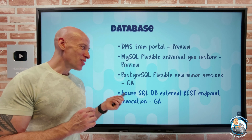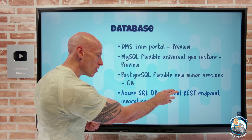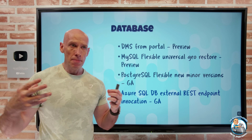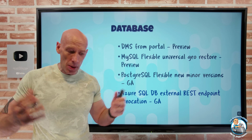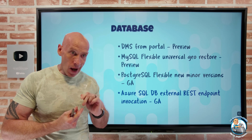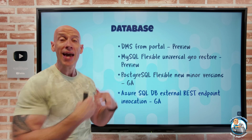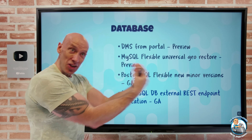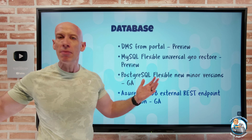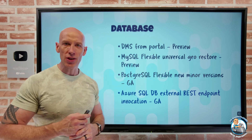Azure SQL Database now has the external REST endpoint invocation capability in GA. Within your SQL commands, you can call SP invoke external REST endpoint and call any endpoint — an Azure Function, a Logic App, anything with an endpoint. You can trigger it, get the responses back, and use it as part of whatever you're doing in that SQL. It's a really nice integration with external endpoints.